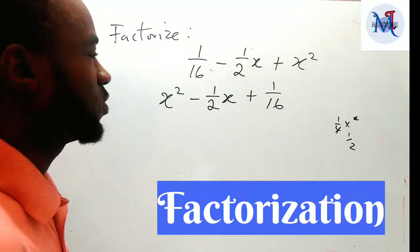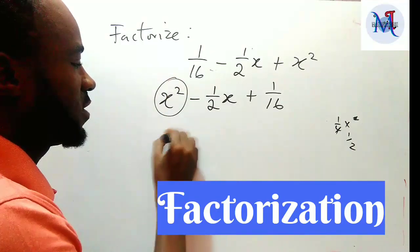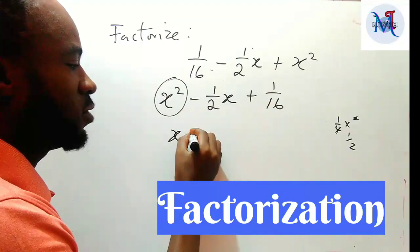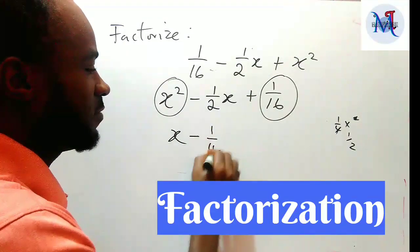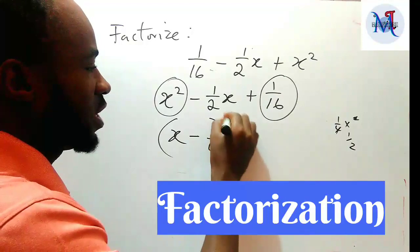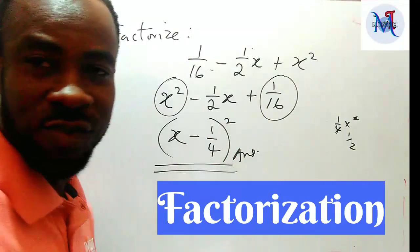So all we have to do is take the square root of the first term, and the square root of this is x. Take the sign that follows, which is minus. Take the square root of the last term, which is 1/4. You group them together and square. That is the solution.